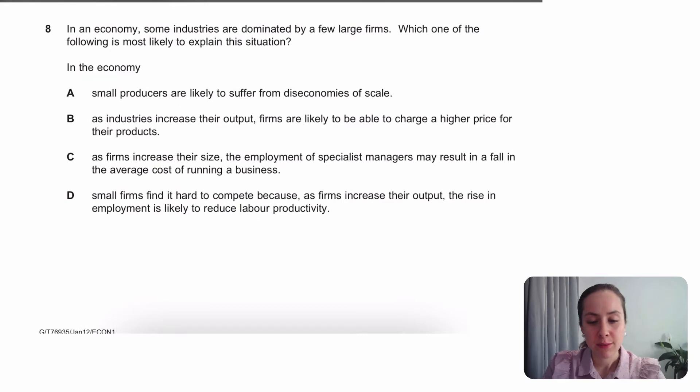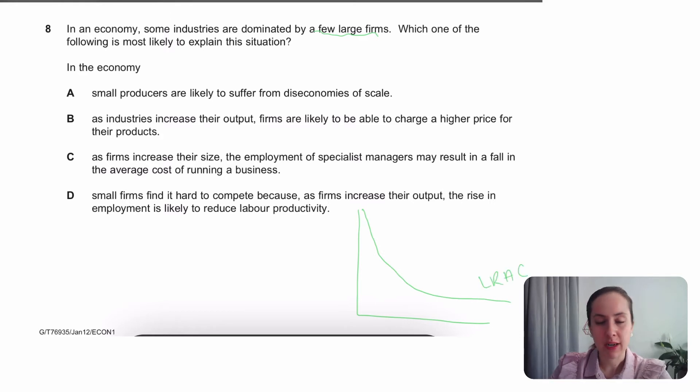Some industries are dominated by a few large firms, which of the following is most likely to explain the situation? So a few large firms, specifically an oligopoly. So I'm looking for something like that, why it has become an oligopoly. And usually, if I were to kind of draw a graph, usually there's large cost advantages. Your long run AC is very low, if you're able to reach quite a high size in the market.